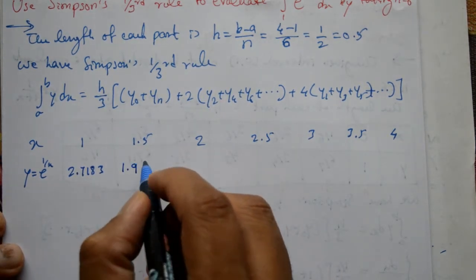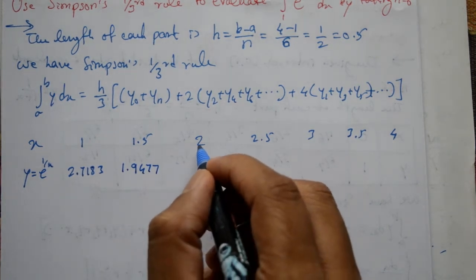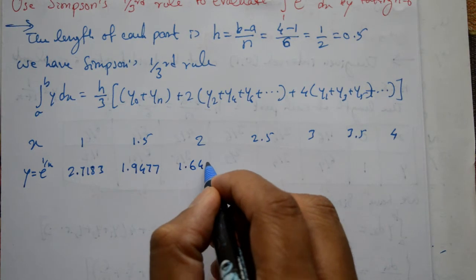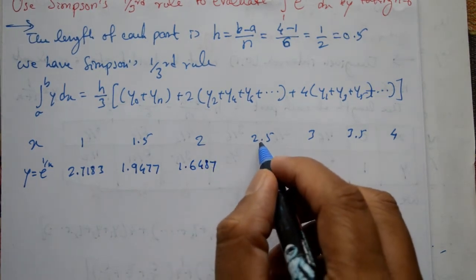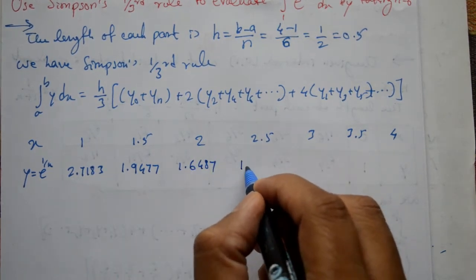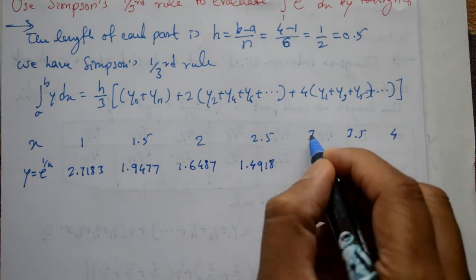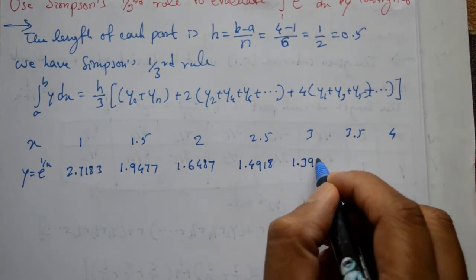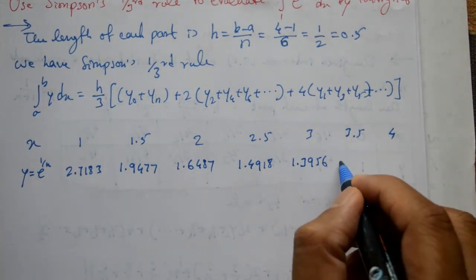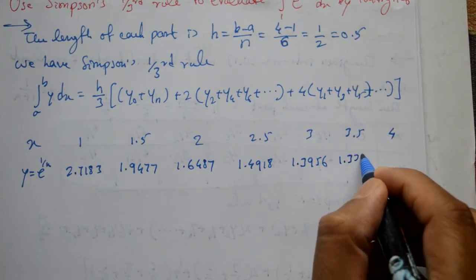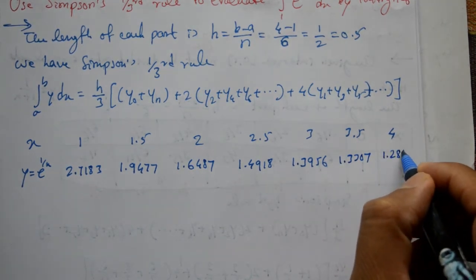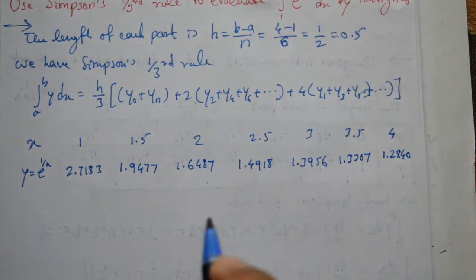E hoga 1.9477 aya ga. Baad me again 2 dhala to 1.6487 aya ga. Baad me again 2.5 dhala to 1.4918 aya ga. Baad me again 3 dhala to 1.3956 aya ga. Baad me again 3.5 dhala to 1.3307 aya ga. Baad me again 4 dhala to 1.2840, e value aya ga.